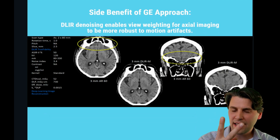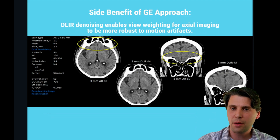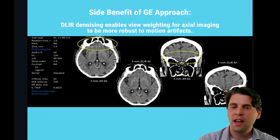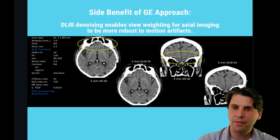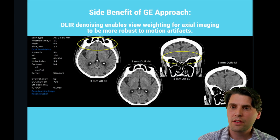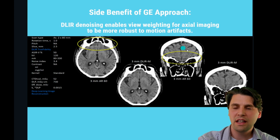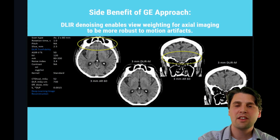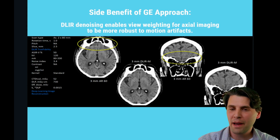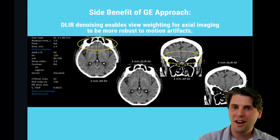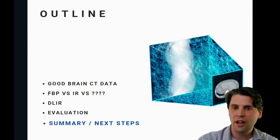A second area of interest, in addition to thin slice imaging, is axial imaging. With DLIR we get a reduction in noise as a side benefit, and we can use that noise reduction to modify the view weighting on the system to achieve significant improvements in motion artifacts — going from this type of image to this type of image. This was in fact the first case of our medical evaluation; it wasn't a cherry-picked case, just the first one off the shelf. You can see there is significant improvement, and that's another area of clinical interest.